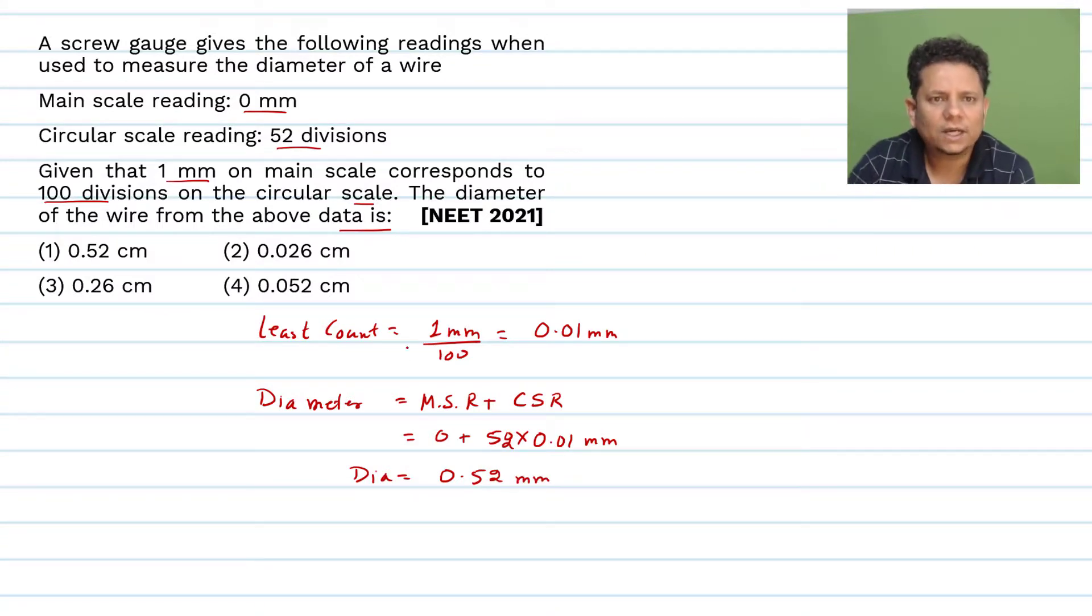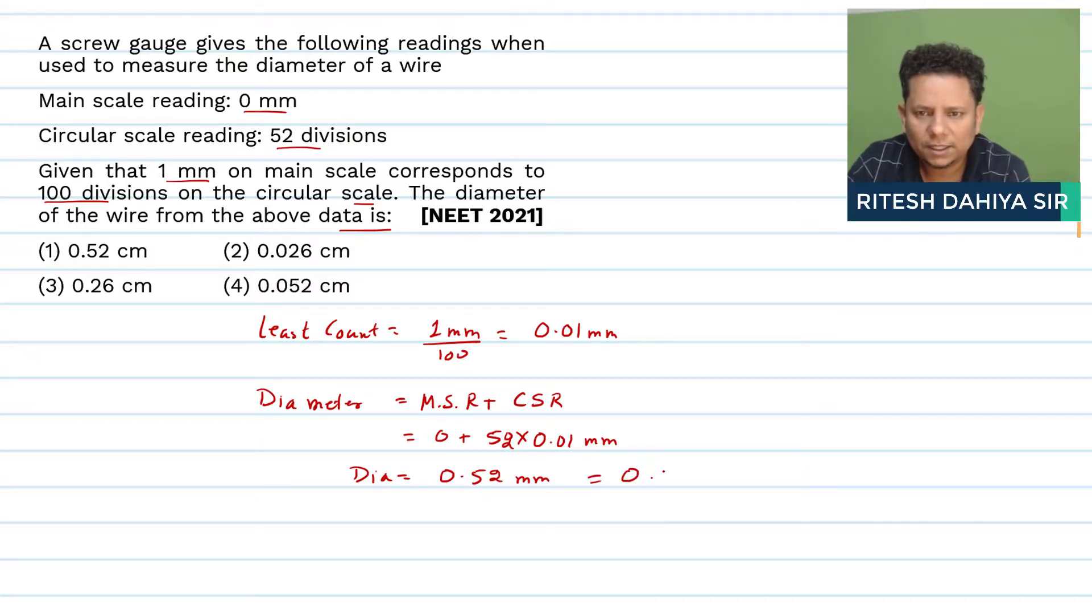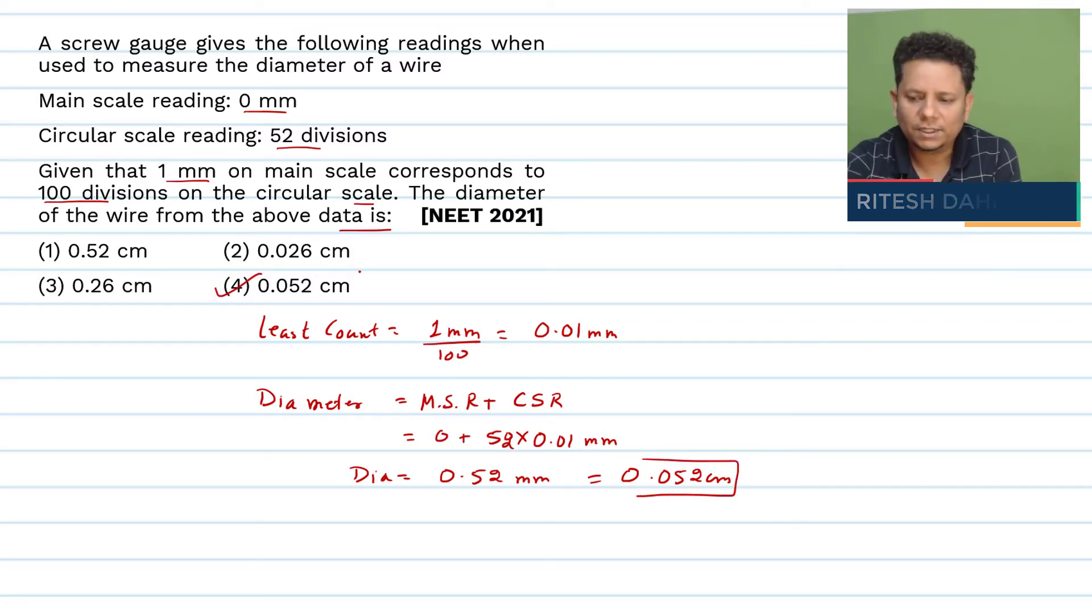Now if we have four answers given in cm, so when we convert it will be 0.052 cm. That will be our final answer. That means option 4 would be the correct choice.